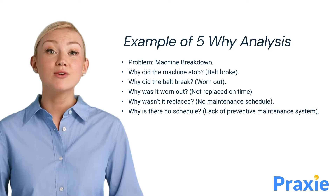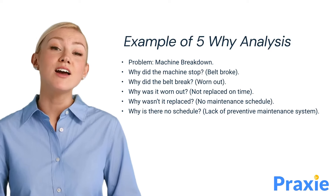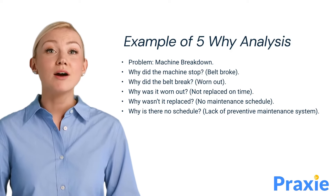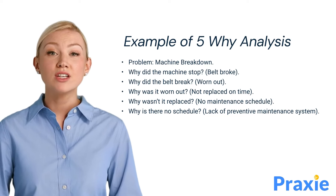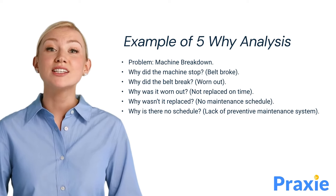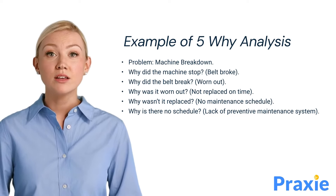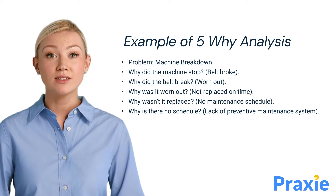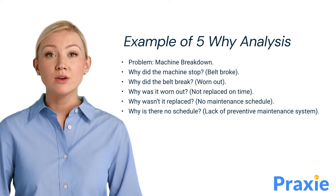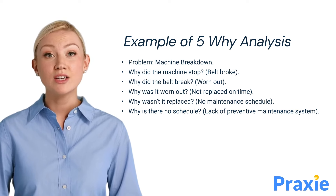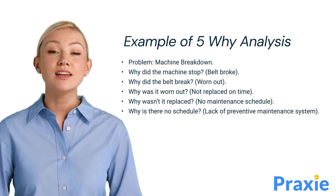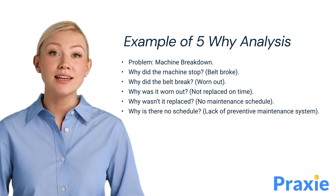Let's go through an example to demonstrate how the 5-Why Process works in practice. The problem: machine breakdown. Why did the machine stop? Belt broke. Why did the belt break? Worn out. Why was it worn out? Not replaced on time. Why wasn't it replaced? No maintenance schedule. Why is there no schedule? Lack of a preventive maintenance system.